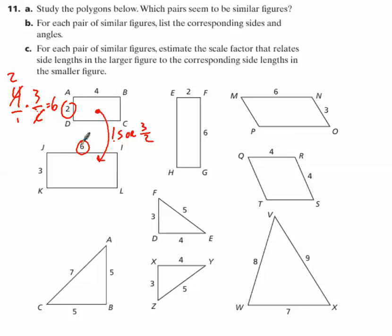So the scale factor to go from rectangle ABCD to rectangle IJKL is 3 halves. And we learned in class that if you go the opposite direction, the scale factor is going to be the reciprocal. Well, what is the reciprocal of 3 halves? It's 2 thirds.